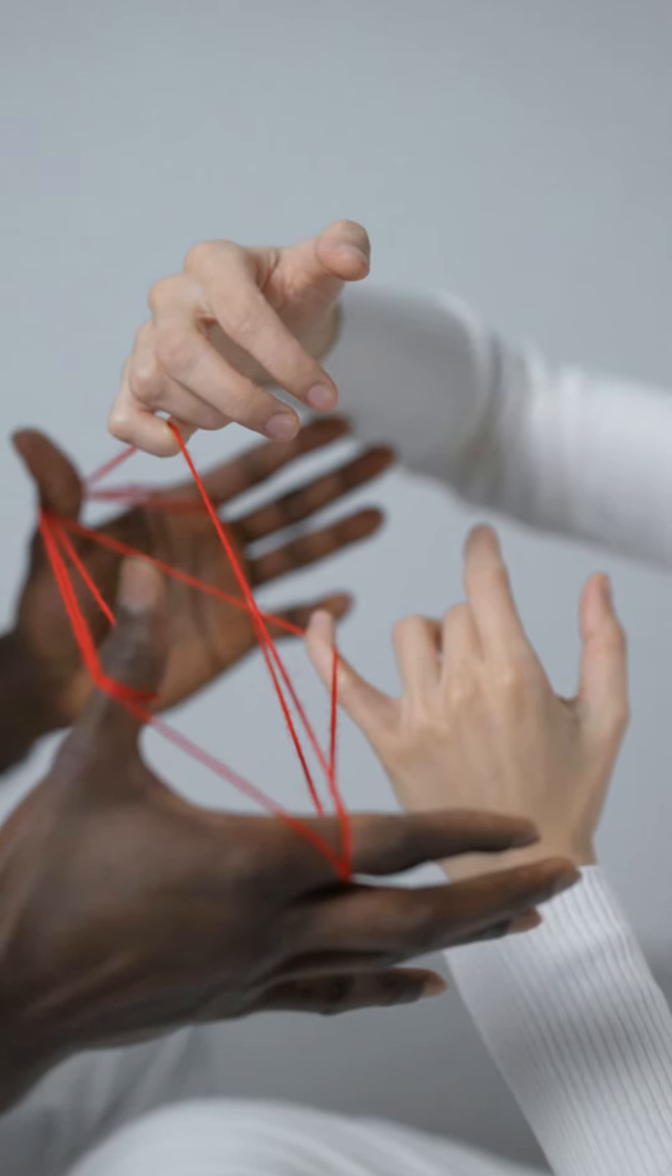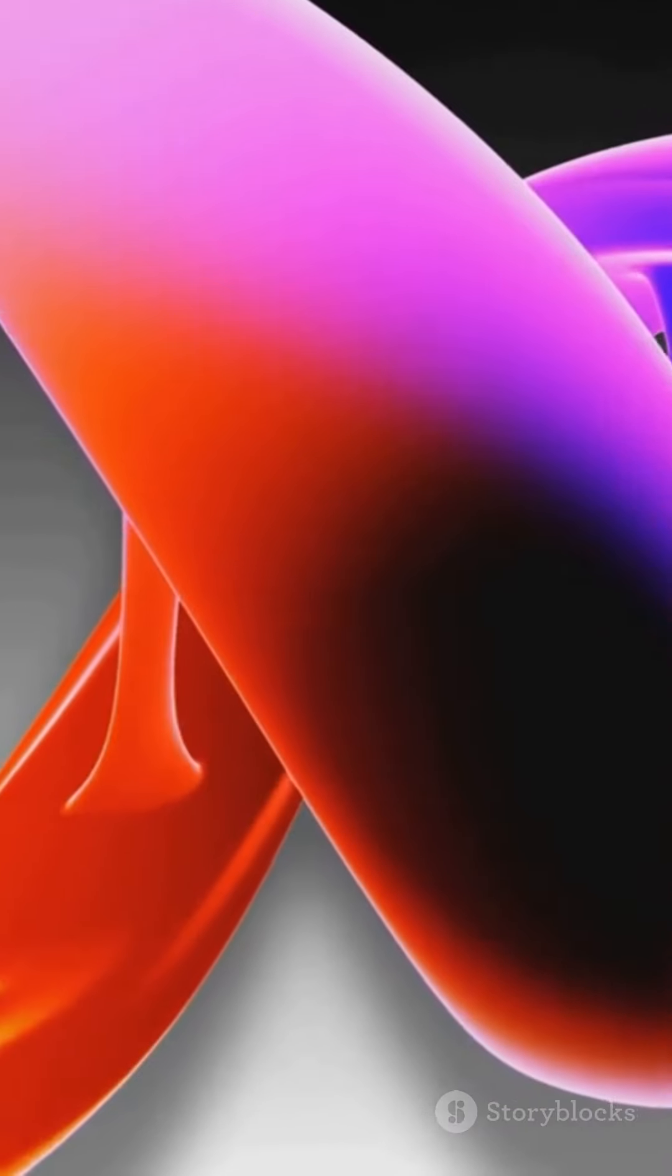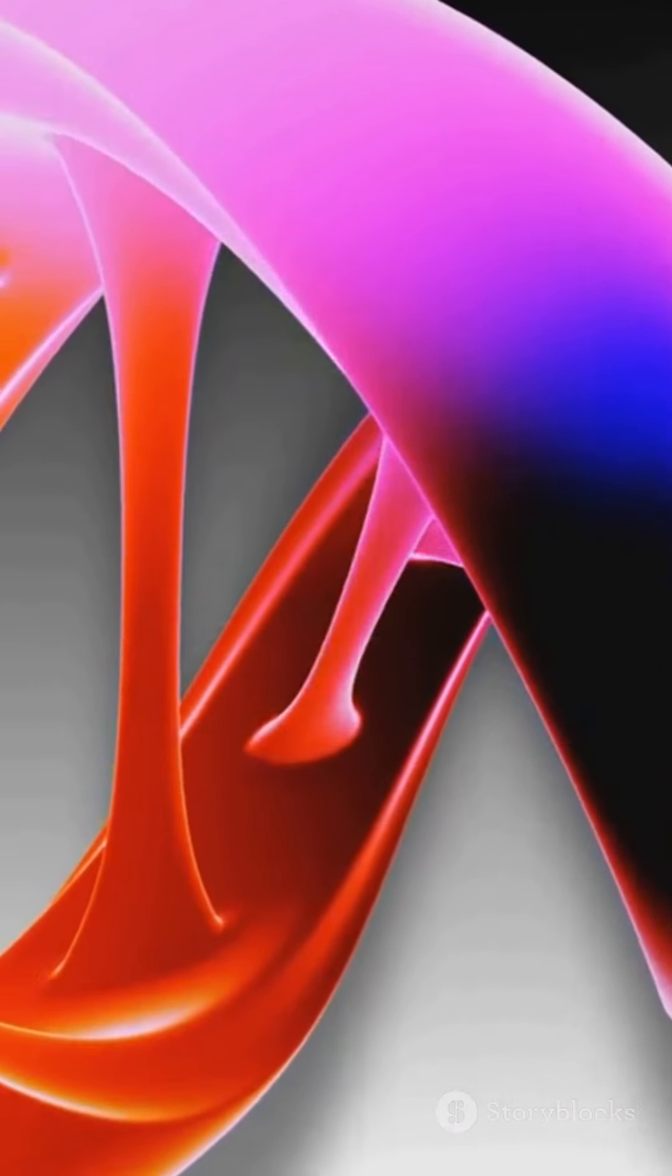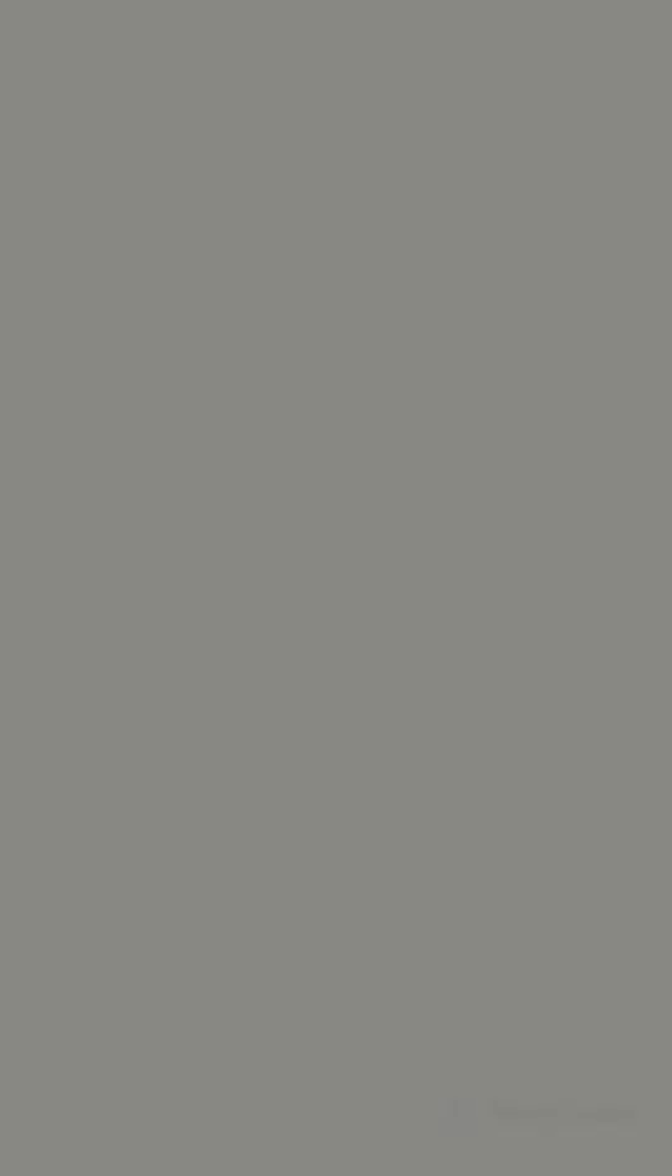Now, here's the kicker. Type IIA is chiral, meaning it has a handedness that doesn't change when you flip it. Imagine looking at your right hand in a mirror. It stays a right hand.